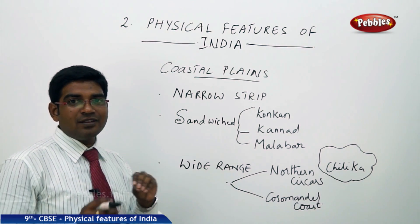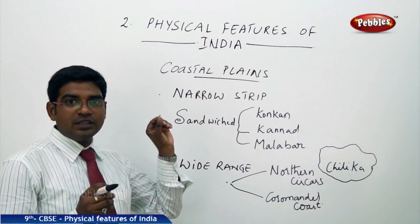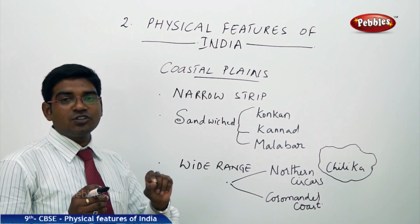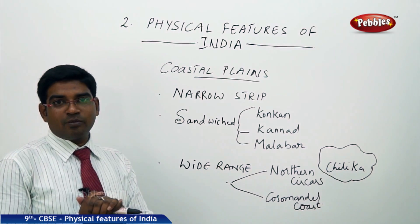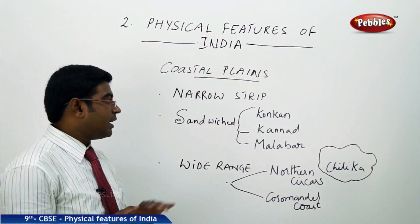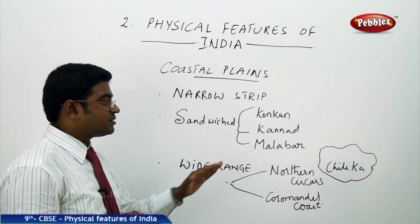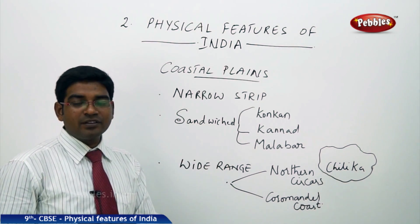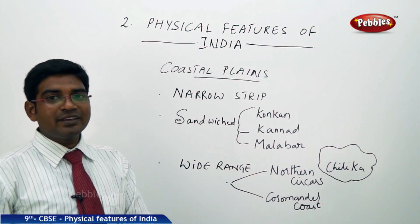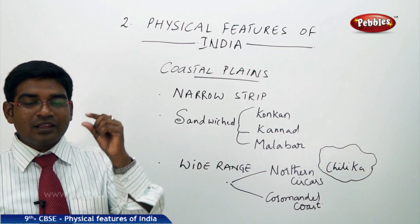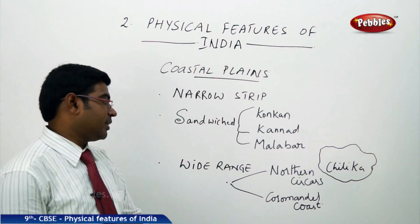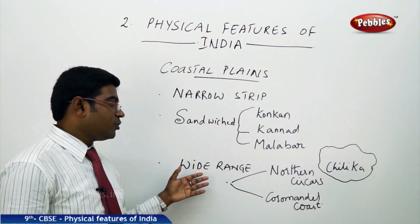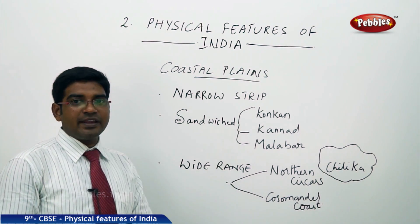It is a narrow plain stretched from the Gujarat region towards the entire Kanyakumari belt, covering a very wide region. The only thing is, it is very narrow. Moving on to the eastern side, it is very wide towards the eastern coast.